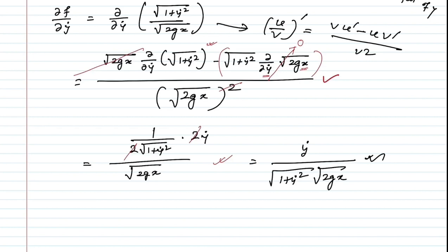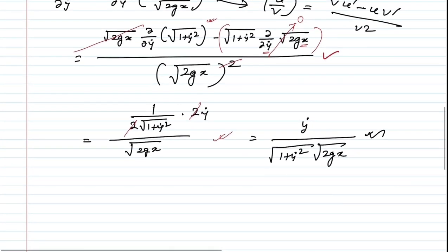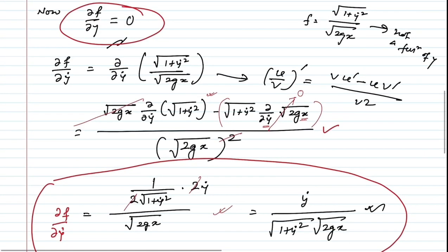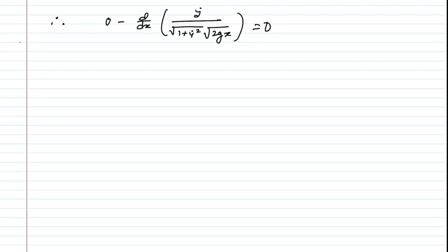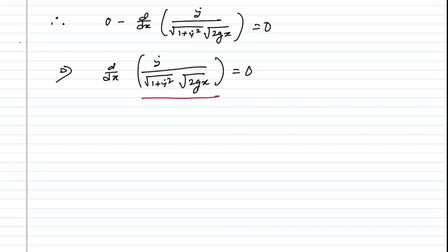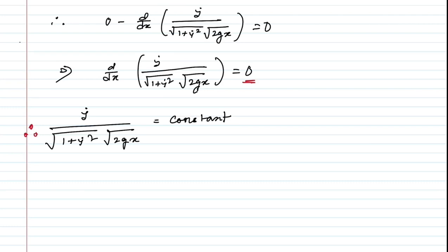Substituting ∂F/∂y = 0 and the value of ∂F/∂ẏ into the Euler-Lagrange equation gives: d/dx [ẏ / (√(1 + ẏ²) · √(2gx))] = 0. This means the expression inside the bracket is constant, so ẏ / (√(1 + ẏ²) · √(2gx)) = k (a constant).